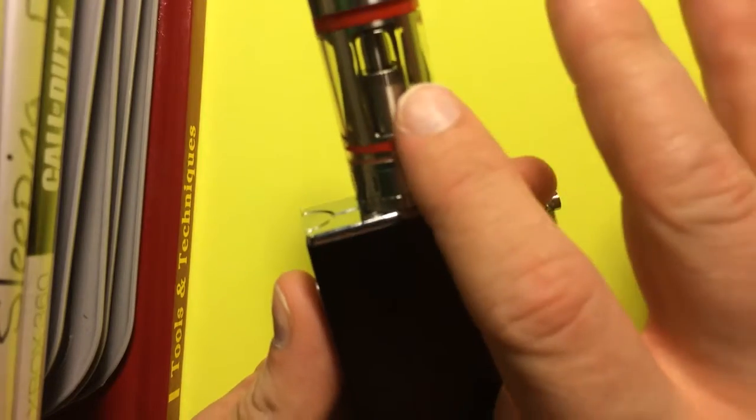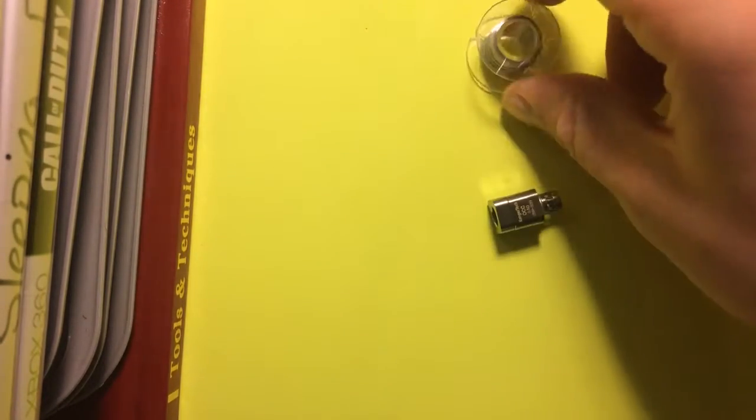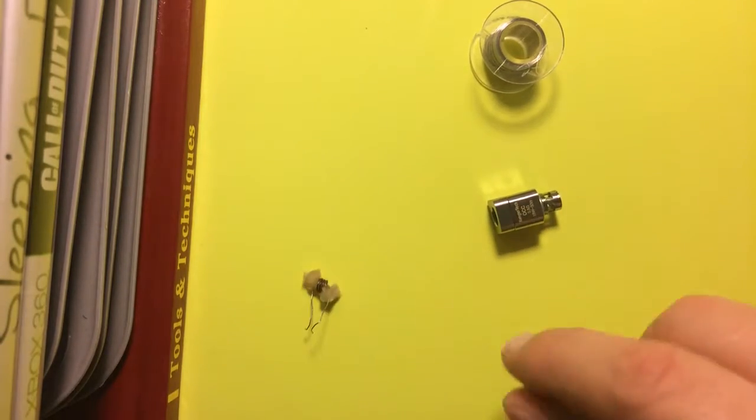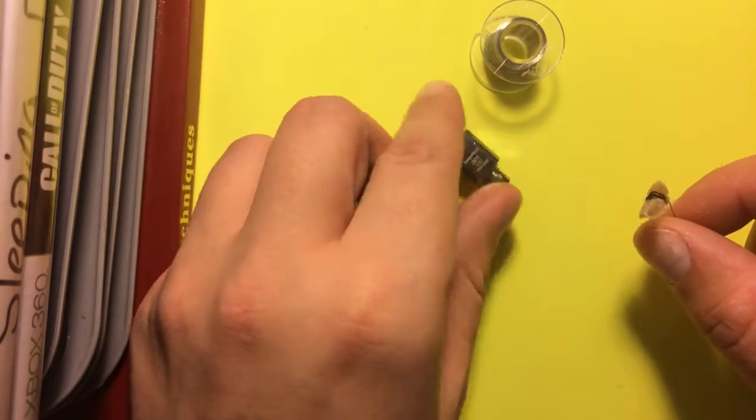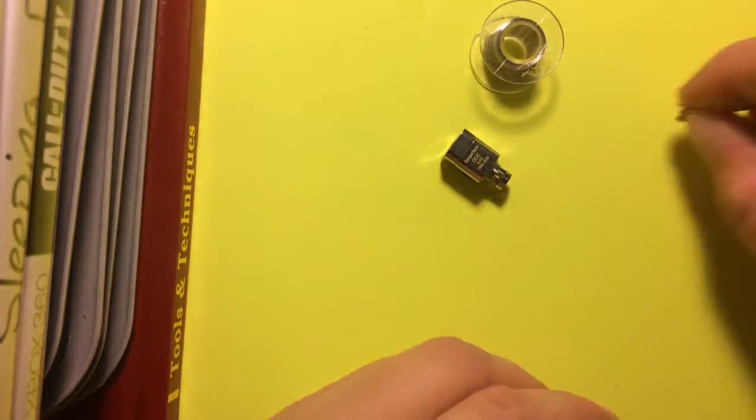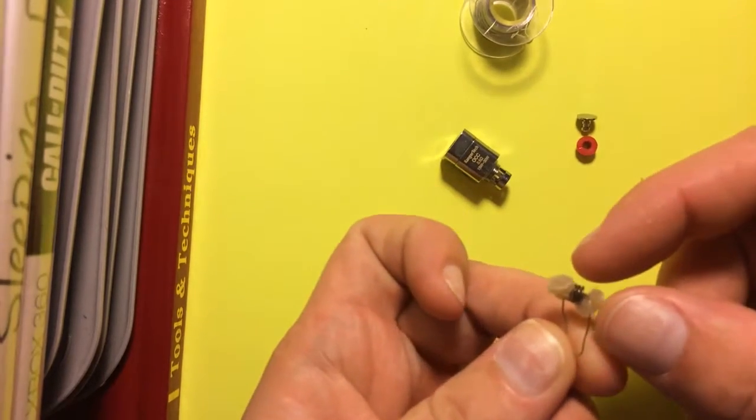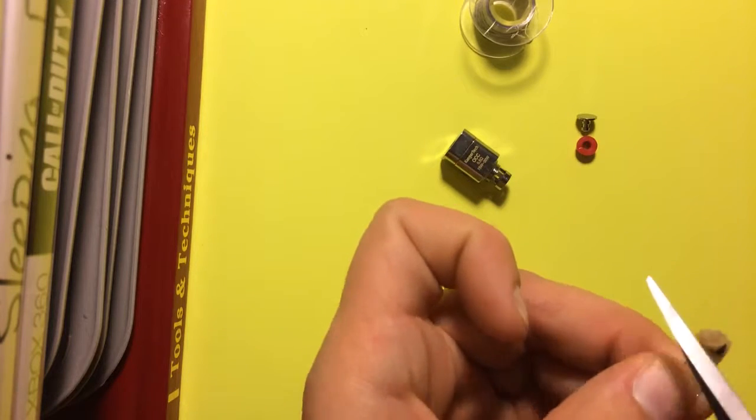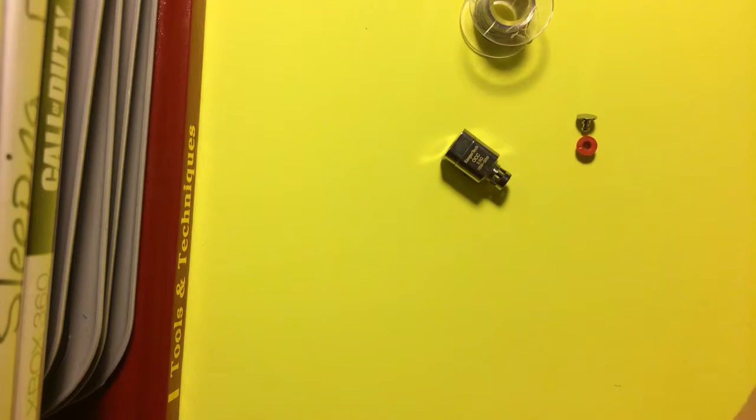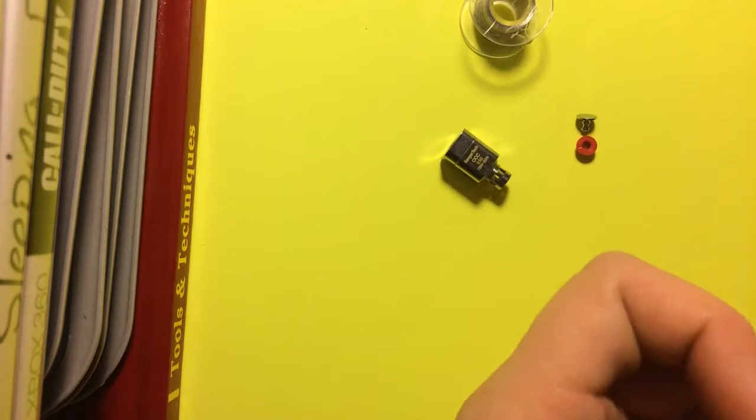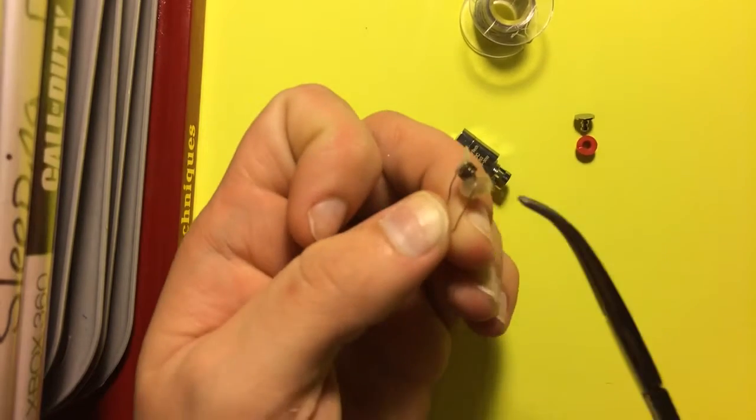This is for the Kanger Tech Sub Tank. I have nichrome 28 gauge wire. This is the pin, this is the plug or plunger, and this is the coil that was in it at 0.5 ohms. I'm going to go ahead and take the cotton out, basically Japanese organic cotton. Let's go ahead and take that off.